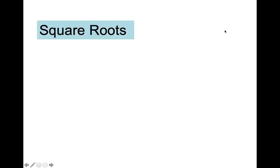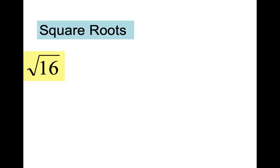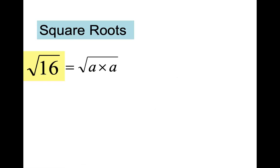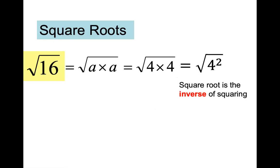We've been dealing this entire chapter with square roots. To find a square root, you ask yourself: what number multiplied by itself is the given number? For example, the square root of 16 is 4, because 4 times 4 — or 4 to the second power — equals 16. Squares and square roots are inverse operations; they cancel each other out, so you're just left with 4 as your answer.